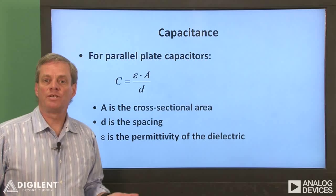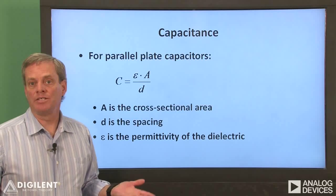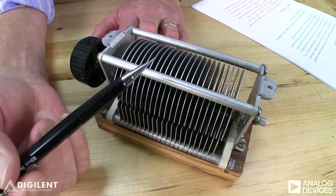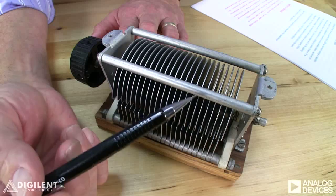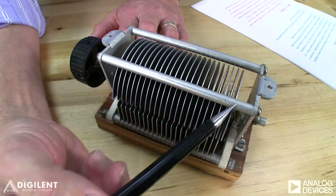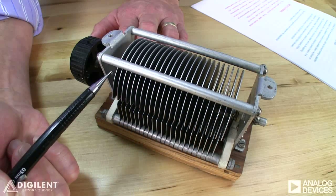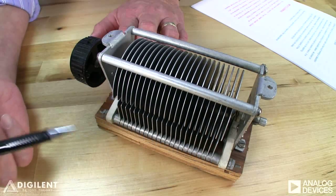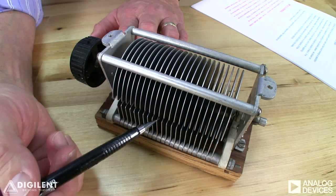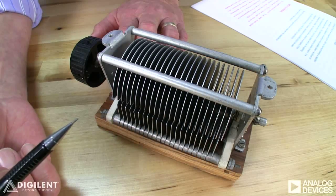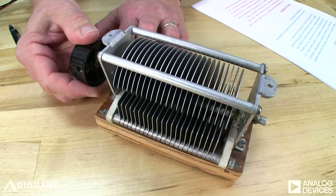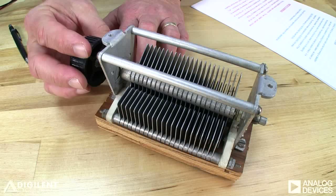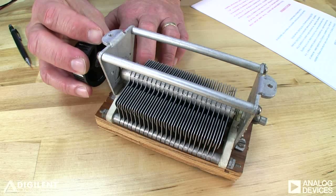Now let's take a look at a few physical capacitors and measure their capacitance to get a feeling for these relationships. This is a variable parallel plate capacitor. The two plates actually consist of multiple plates each — these fins all create one plate, electrically connected, and the other plate is created by these fins. The two sets of fins are separated by air gaps, so the dielectric is simply air. By turning the knob on the side, I can increase or decrease the capacitance by increasing or decreasing the area of overlap of the conductors.